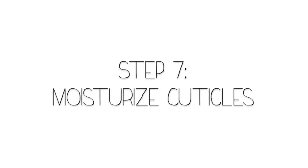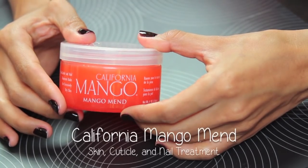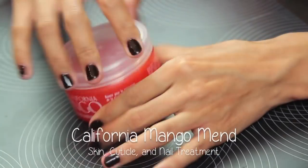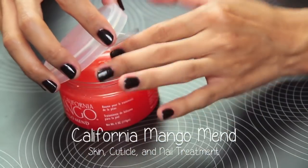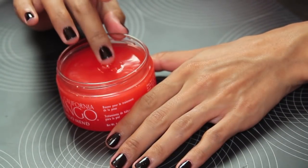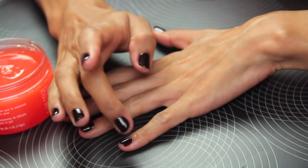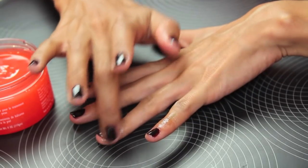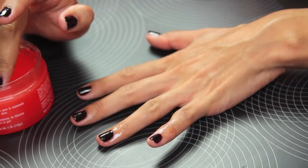So I'm just going to do one coat of this, and then I'm going to move on to step seven, which is moisturize the cuticles. Oh my gosh, this stuff is amazing—my favorite product. It's called California Mango Mend and it smells really good.